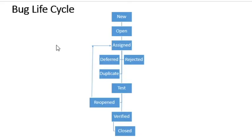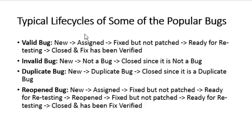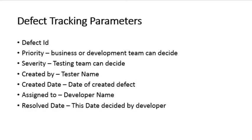Looking at the bug life cycle flowchart, the bug's status starts from New and ends at Closed. Each bug has its own life cycle before getting closed. It goes from New to Open, then gets assigned to the developer. The developer validates the bug and may move it to Deferred, Duplicate, Rejected, or fix it and move it to Test. The tester will reopen it if the fix is missing or verify and close it if fixed. Valid and invalid bugs each follow different status paths.